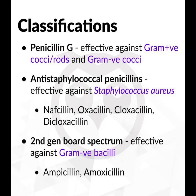Classifications: Penicillin G is effective against gram-positive cocci, rods, and gram-negative cocci. Anti-staphylococcal penicillins are effective against Staphylococcus aureus. Drugs include nafcillin, oxacillin, cloxacillin, and dicloxacillin.